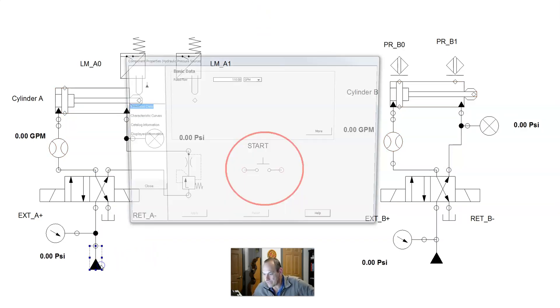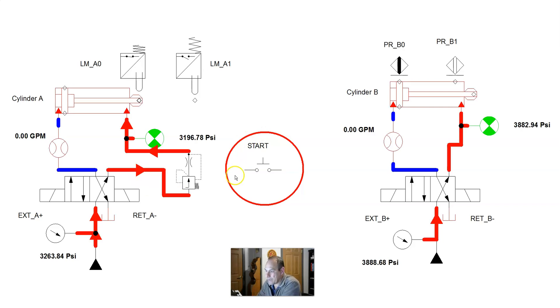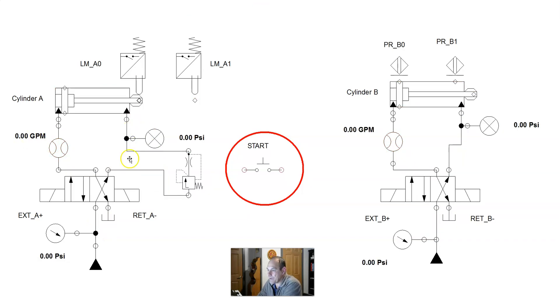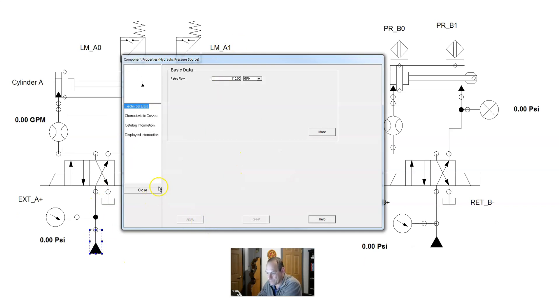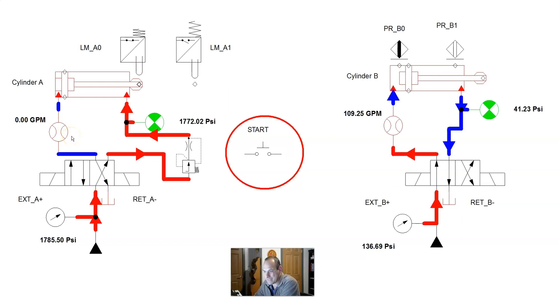Now, what you've seen is I changed the rated flow to 110 gallons per minute. What I wanted to share with you was a couple of basic principles. The hydraulic supply creates flow. So we'll demonstrate this here real quick. Very important principle to understand. We're going to energize our circuit and we're at 107 and three quarters gallons per minute. Now if I bring that down to 20 gallons a minute, let's slow this system down and look at what our flow rate is.